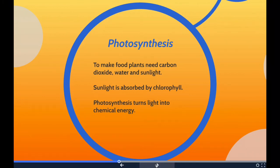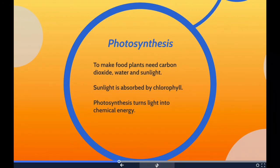Carbon dioxide from the air passes through small pores — holes in the leaves — called stomata. Water is absorbed by the roots and passes through vessels in the stem on its way to the leaves. Sunlight is then absorbed by a green chemical called chlorophyll in the leaves.